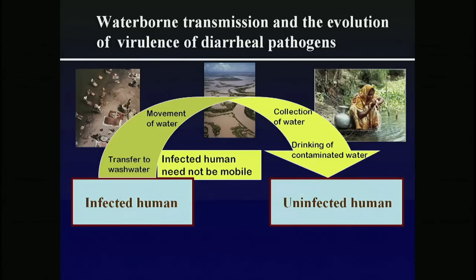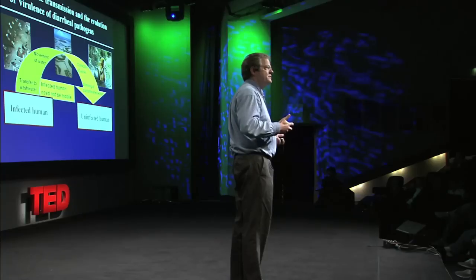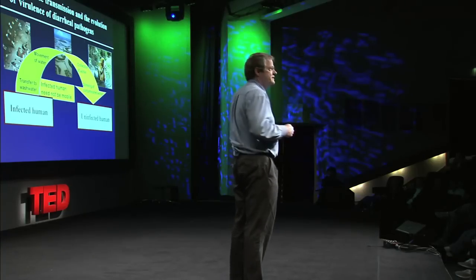To illustrate that: if you've got a sick person in bed, somebody is going to be taking out the contaminated materials, washing them, and the water may move into sources of drinking water. People will come into places with contaminated drinking water and bring things back to the family. The whole point is that a person who can't move can still infect many other individuals.